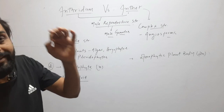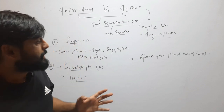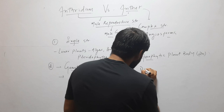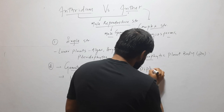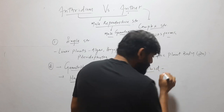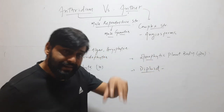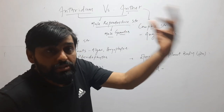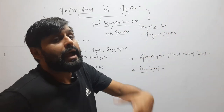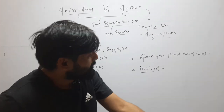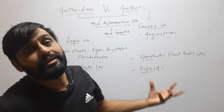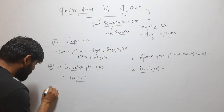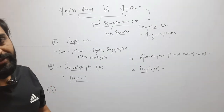Antheridium will always be haploid, but anther is a diploid structure. Although inside the anther sporogenous tissue is present, in that tissue meiosis will occur and haploid male gametes will form — but the overall structure of the anther is diploid.